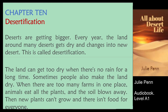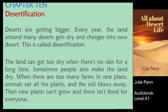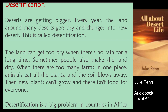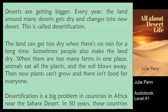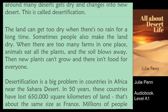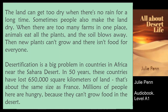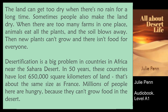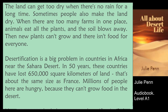Chapter 10: Desertification. Deserts are getting bigger. Every year, the land around many deserts gets dry and changes into new desert. This is called desertification. The land can get too dry when there's no rain for a long time. Sometimes people also make the land dry. When there are too many farms in one place, animals eat all the plants and the soil blows away. Then new plants can't grow, and there isn't food for everyone.